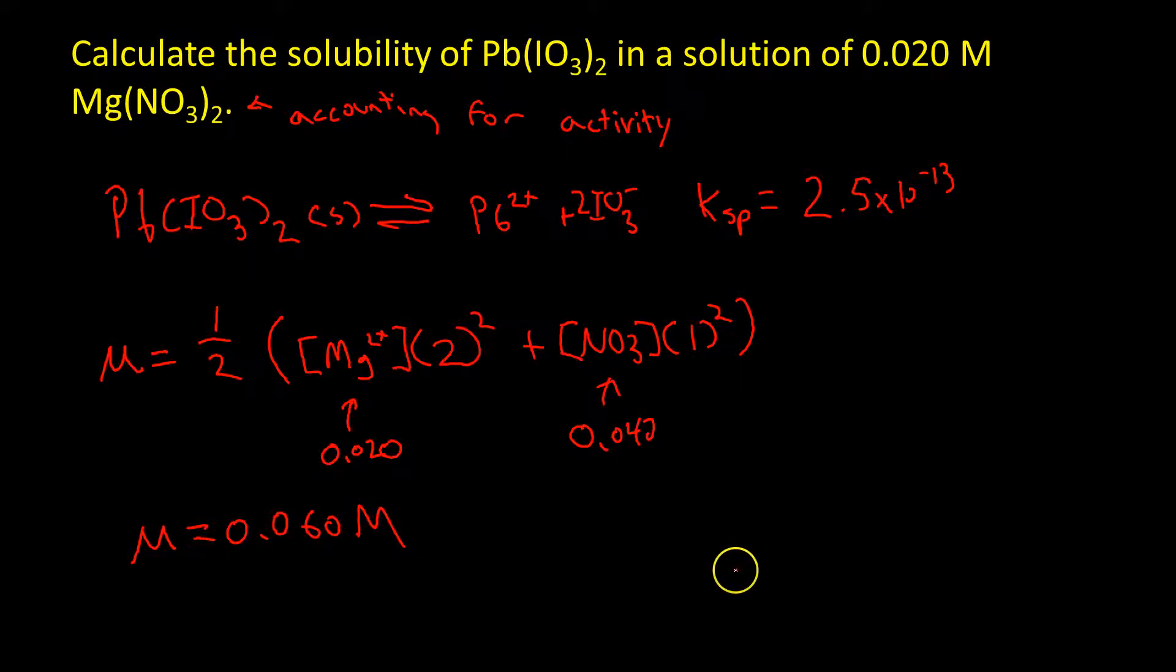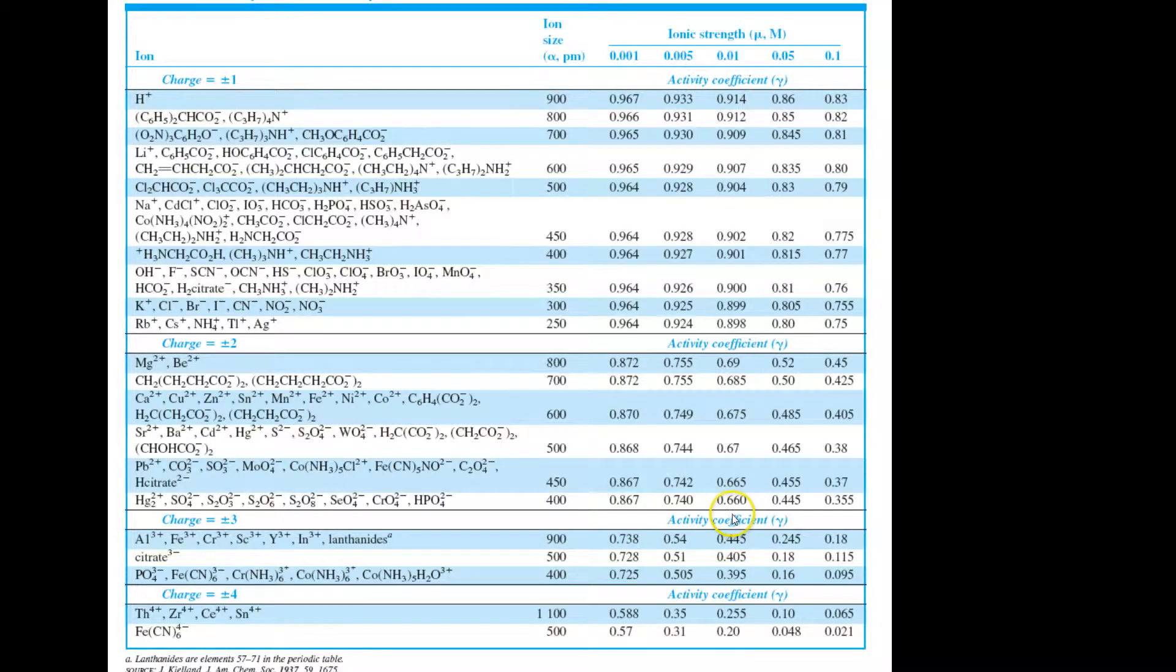In an ideal world, we'd be able to look up on our table activity coefficients for lead and iodate. Lead is somewhere here in the two, and iodate is somewhere in the ones. But you'll notice 0.06 molar is not here - we only have information for 0.05 molar and 0.1 molar. There's a couple different approaches. You can do the interpolation method, which I showed you in a previous web video, and that will be totally acceptable for this exam.